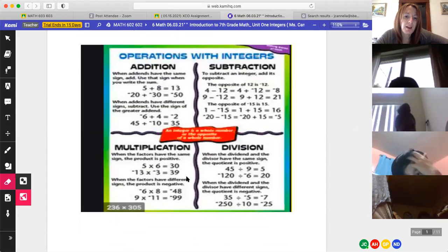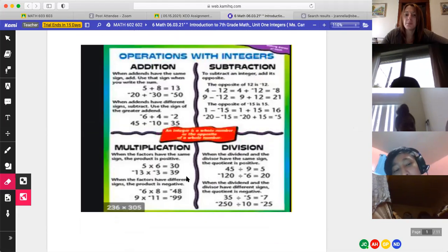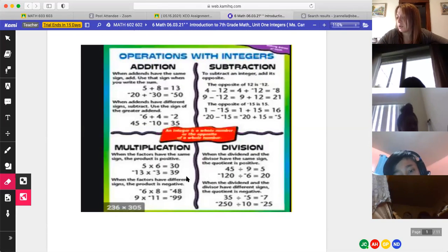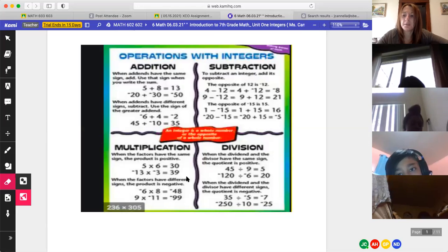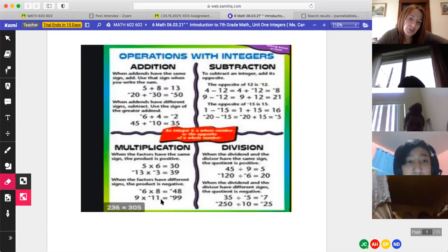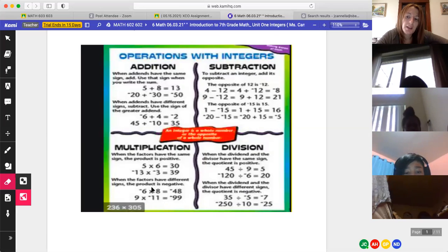When the signs are different, you keep the sign of the higher number and subtract for addition. In subtraction, we're going to do the keep, change, change, the additive inverse. I know this is redundant, but we need to go over it. When you are multiplying and when you are dividing integers, when the signs are the same for multiplication or division, you simply are going to either multiply or divide and keep the sign. When the signs are different for multiplication and division, it's always negative.